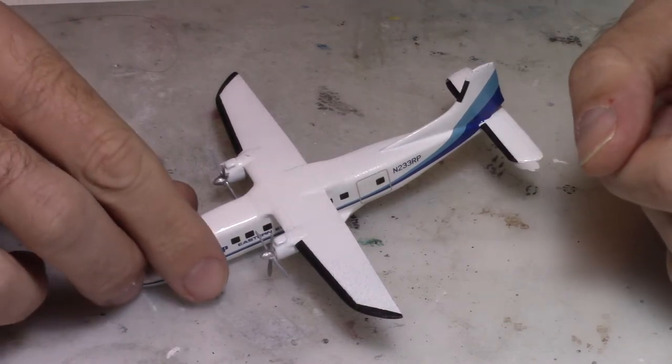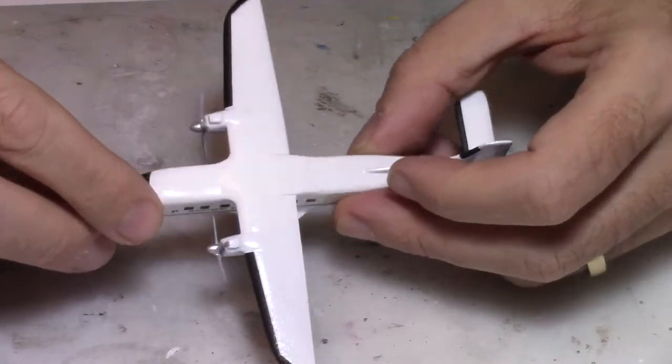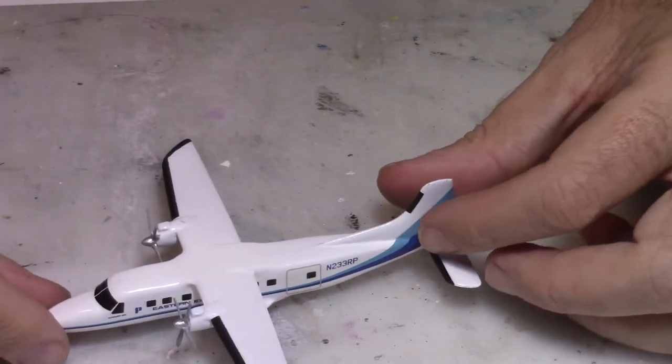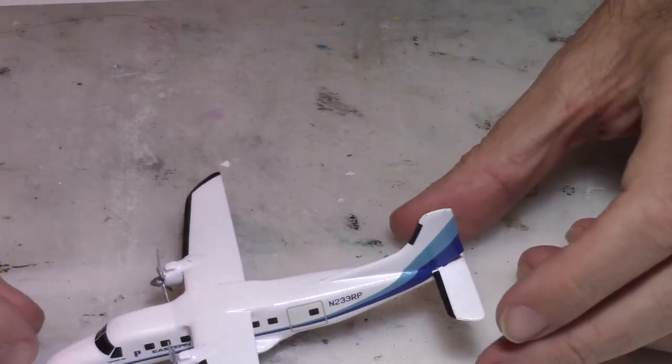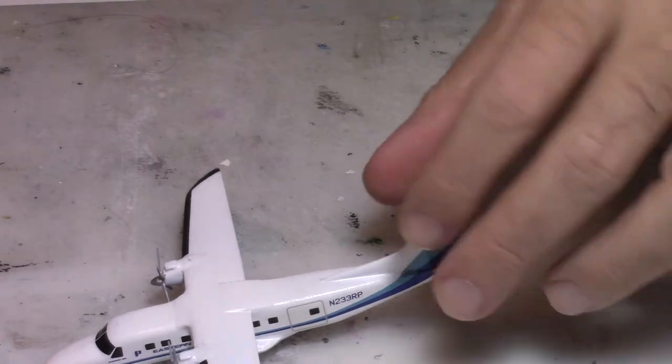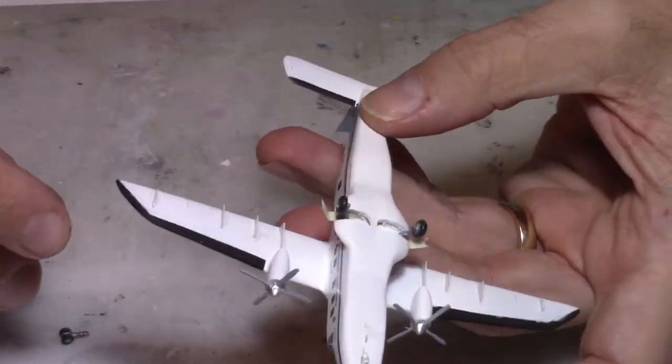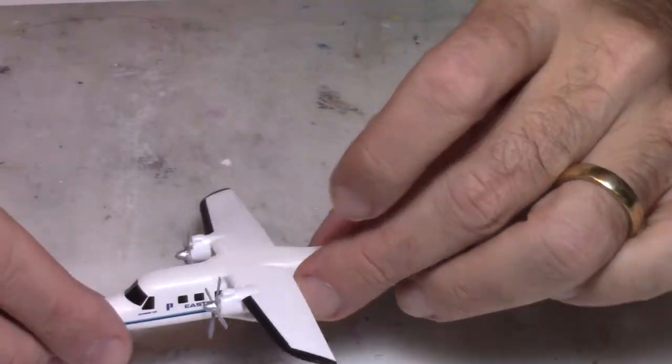Hi everybody and welcome back to my modeling channel. So today we're going to rescue another little kit. This was a Dornier 228 made by Welsh Model and of course that aircraft has been damaged in one of my relocations.